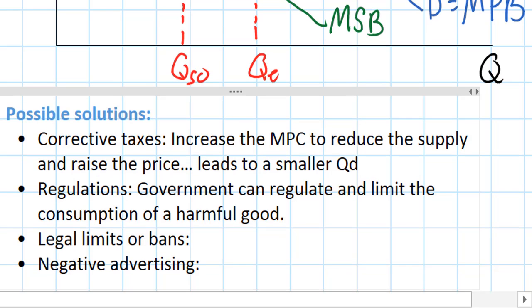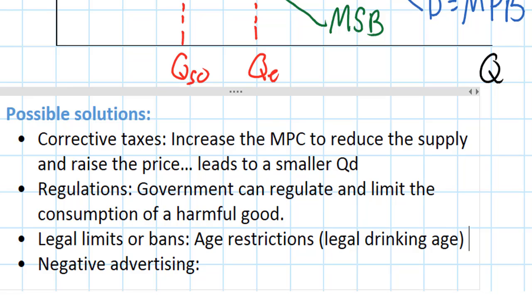Legal limits are banned. Think about how the government regulates alcohol consumption: age restrictions. There's a legal drinking age in this case. This is a way to limit the demand for alcohol and make sure that the market size is smaller and the equilibrium quantity is closer to the socially optimal quantity.